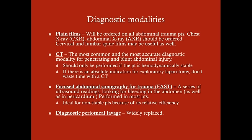Plain films should be ordered on all abdominal trauma patients. A chest x-ray can reveal diaphragm injury — if you see bowel contents in the thorax, that patient goes straight to the OR. An abdominal x-ray is also useful. Cervical and lumbar spinal films should be added, especially if a chance fracture is suspected. Thoracic spinal films should be included as well when looking for any spinal problems.